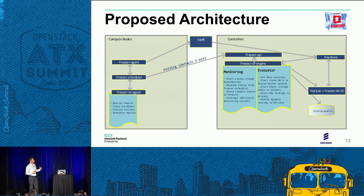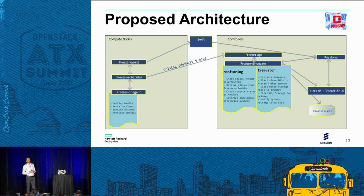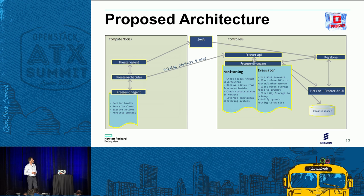As in normal Freezer, we can execute custom actions before or after events happen. We can use that to manage the network part that needs to be taken care of in case we're doing this across different data centers. Behind the Freezer APIs, there will be a Freezer DR engine — a long-running service that is the orchestrator of all actions that happen when disasters occur.